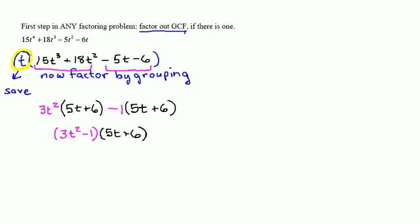And this T that I factored out at the beginning that I saved, I now want to bring down and put into my final answer by just appending it to the front of my factors. So that my final factorization is T times 3T squared minus 1 times 5T plus 6.